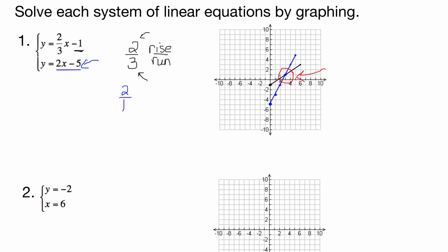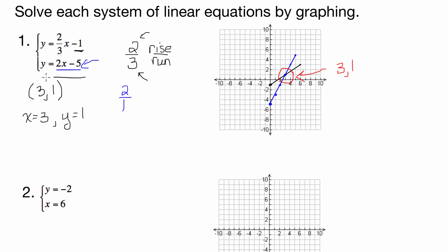What point is that? Well, let's look — we are 3 for our x, and we are up 1 for our y. So the solution is (3, 1). Your teacher might want you to write x equals 3, y equals 1 — just go by whatever they say. I'm used to giving it as an ordered pair, especially when solving by graphing.